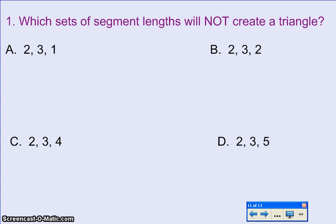So this first question asks which sets of segment lengths will not create a triangle. You will see this on your book work and you will see this on quizzes and tests, so make sure you take good notes and know how to solve a problem like this. We've learned already in previous videos that to create a triangle, the two smallest segments have to add up to be bigger than the largest one.